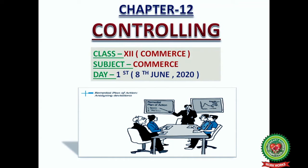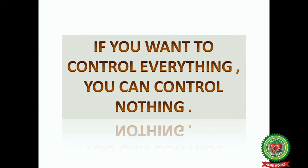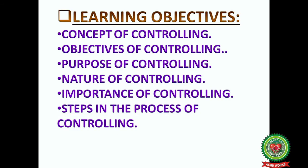Friends, it's time for your Commerce class. We are on the management section and today our topic is the second last function of management — that is Controlling, chapter number 12. The quote 'If you want to control everything, you can control nothing' simply means that for a single manager it is quite difficult to manage each and everything, so the manager provides strategies on how to manage activities in different departments.